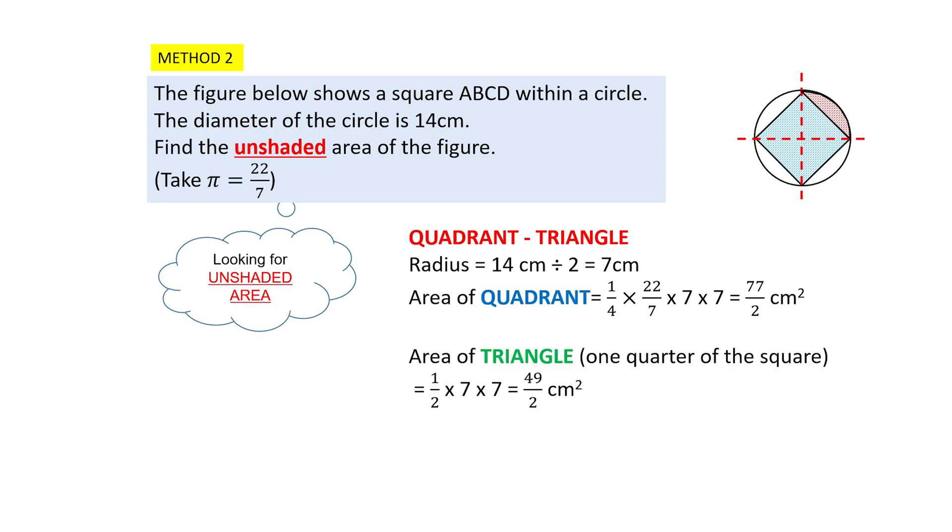To find the area of the triangle, we will take half times base times height. And the base and height happen to be the radius. So half times 7 times 7, and you get 49 over 2 square centimeters.